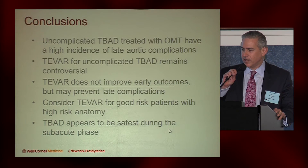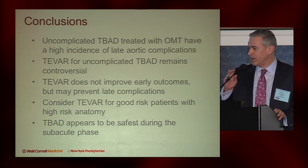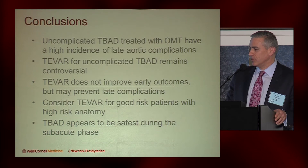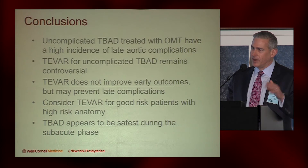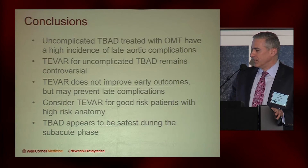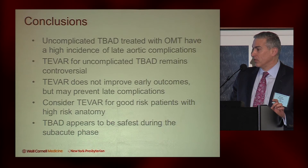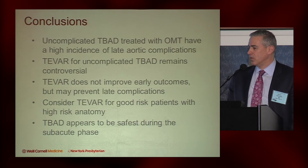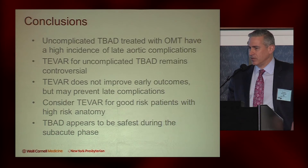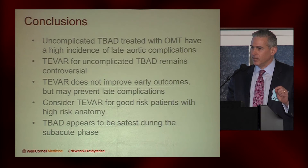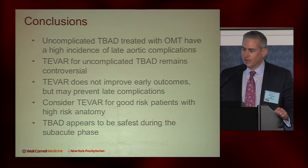In conclusion: uncomplicated type B dissections treated with optimal medical therapy have a high incidence of late aortic complications that we'd like to prevent with TVAR in appropriate patients. TVAR is still controversial for uncomplicated type B dissections and we don't have unequivocal data to support doing this broadly. TVAR does not improve early outcomes, as seen in INSTEAD and other data, but may prevent late complications particularly in high-risk groups. Consider TVAR in good-risk patients with high-risk anatomy for late poor outcomes — and if doing it, do it in the subacute phase, as it is safer than in the acute phase.